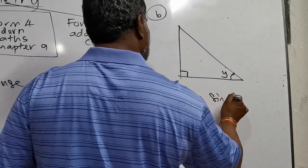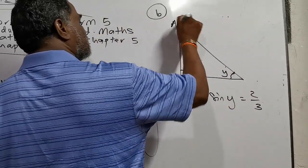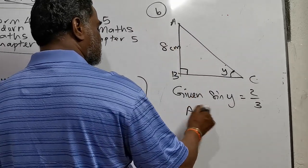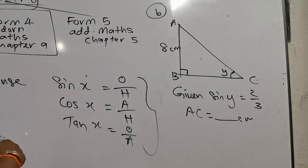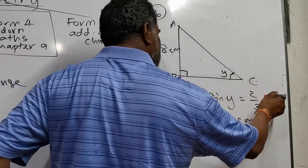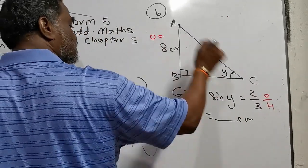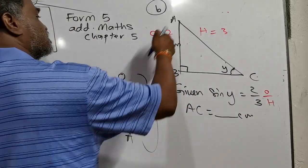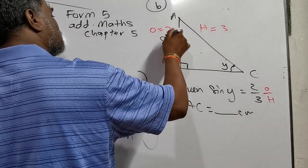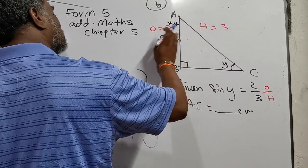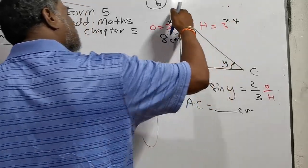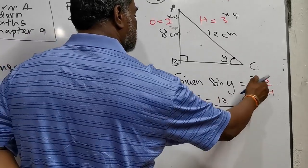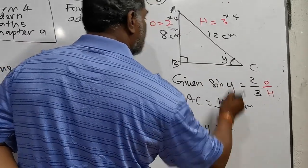For example, they say: given sin Y = 2/3, and BC = 8 cm, find AC in centimetres. For this type of question: sin is opposite over hypotenuse, so opposite is 2 and hypotenuse is 3 — that is the ratio. The actual length of BC is 8 cm. Since the ratio times 4 gives 8, you also multiply 3 by 4, giving AC = 12 cm.